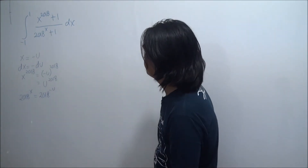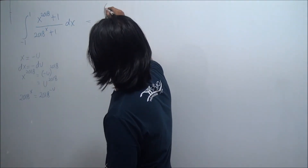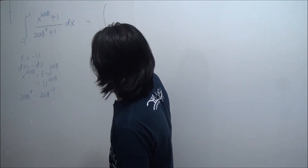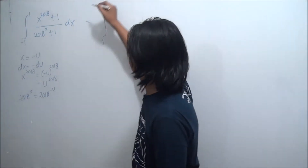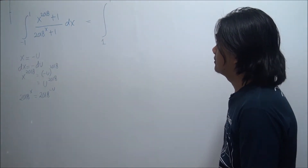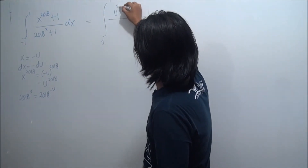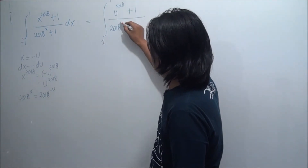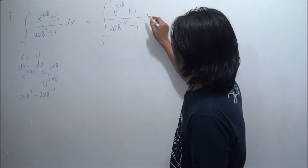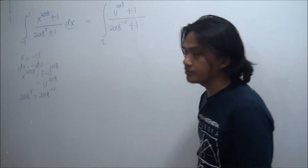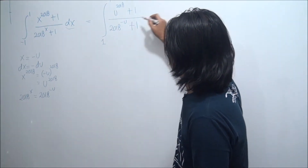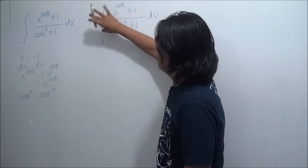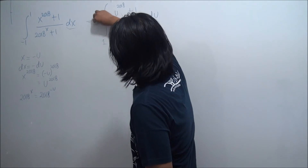So x to the power of 2018 becomes negative u to the power of 2018, which equals u to the power of 2018 since 2018 is even. When x equals negative 1, u equals 1, and when x equals 1, u equals negative 1. The numerator turns into u to the power of 2018 plus 1, and the denominator becomes 2018 to the power of negative u plus 1, and dx becomes negative du. Using the minus sign, we switch the limits back to run from negative 1 to 1.